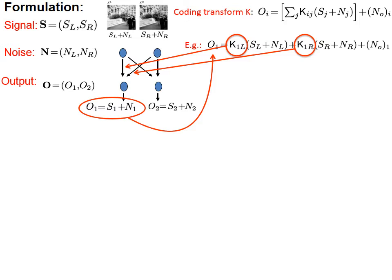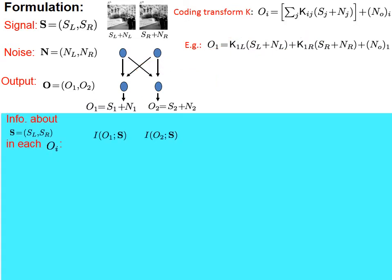The coding transform from the two input nodes to the two output nodes is completely described by four feedforward weights — two to output neuron 1 and two to output neuron 2. This 2x2 set of weights can be described by a 2x2 matrix K. The amount of information in each neuron, O1 or O2, about the input signals S can be measured by mutual information, written as IO1S and IO2S.